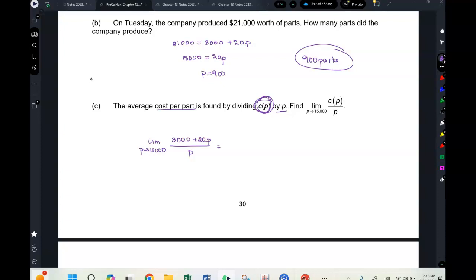Is this t approaches infinity? No it's not, it's 15,000. It's a large number but it's still not p approaches infinity. This is still a finite number, so you still treat it as if it was p approaches 2 and you just plug it in. So we plug this in and we get, I think it's $20.20.